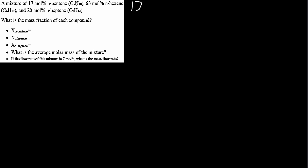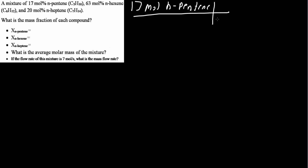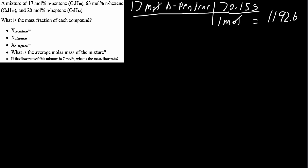We have 17 mole percent of n-pentene, so 17 moles of n-pentene. I'm going to assume a basis of 100 moles to make our lives a bit easier. One mole of C5H10 is 70.15 grams, so 17 moles gives us 1192.6 grams of n-pentene.